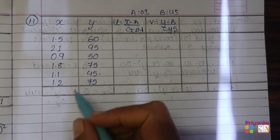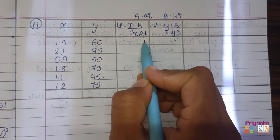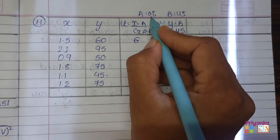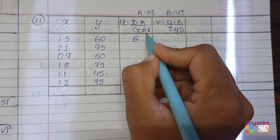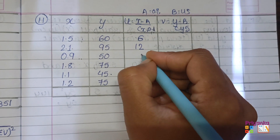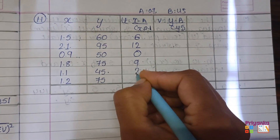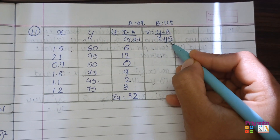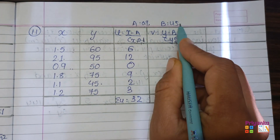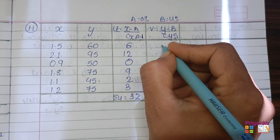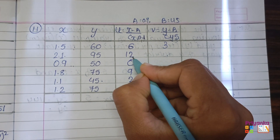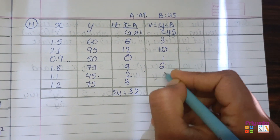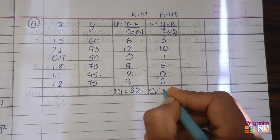Let's start the calculation — please hold your calculator. For u: 1.5 minus 0.9 divided by 0.1, you will get 6. Next, 2.5 minus 0.9 divided by 0.1, here you will get 12. Continue with the remaining values, and here we get σu = 32. Next for v: for y we take 60 minus 45 divided by 5, we get 3. Take 12 minus 45 divided by 5, we get 10. Continue with the remaining, and here we get σv = 26.